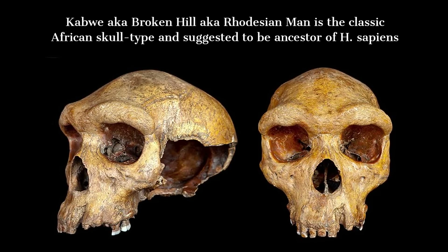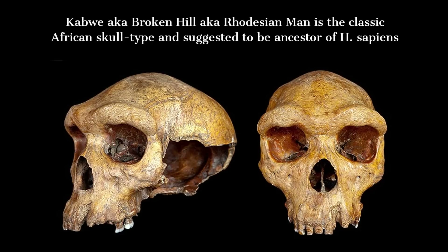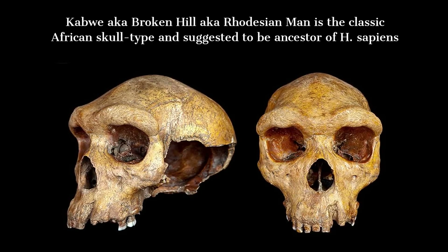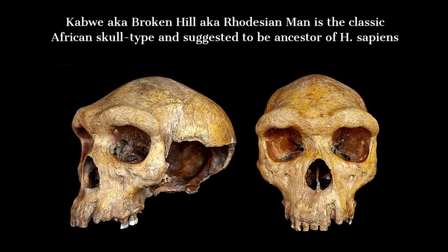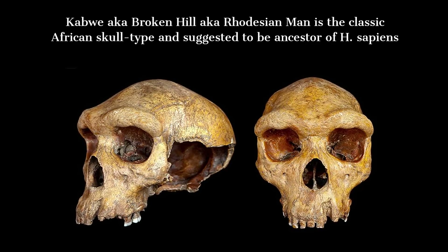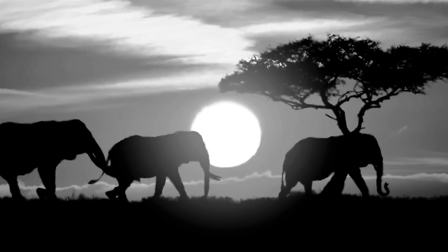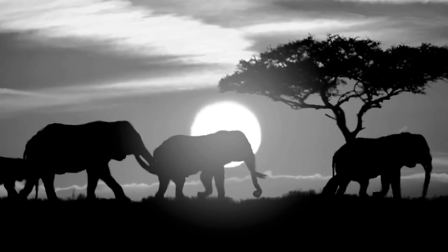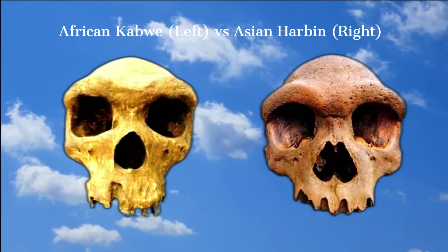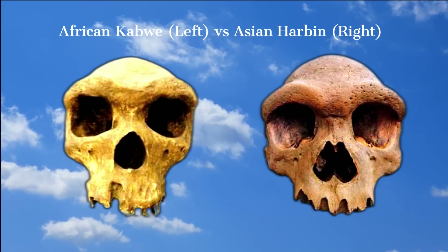The Kabwe people likely consisted of skilled hunter-gatherers who relied on their strength, intelligence, and social cohesion to thrive. They honed their hunting skills, tracking and capturing a variety of game ranging from large ungulates to smaller animals. The presence of stone tools in the region suggests that the Kabwe individuals were adept at crafting instruments for hunting and processing food. The Kabwe cranium, with its distinctive features, represents a critical chapter in the story of human evolution.